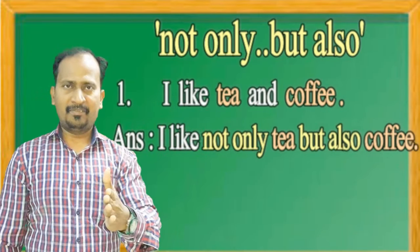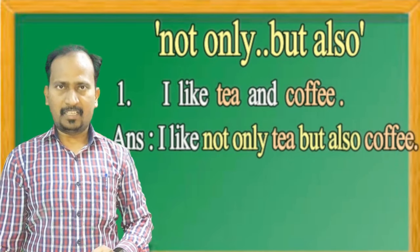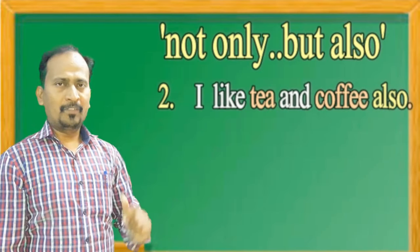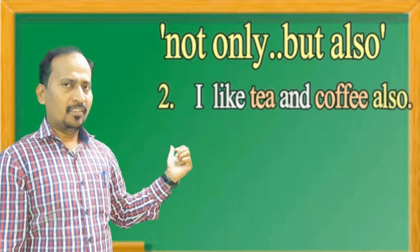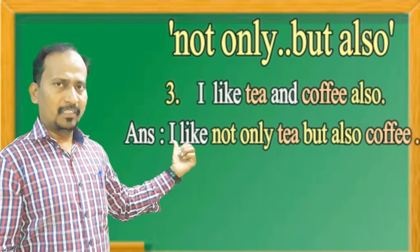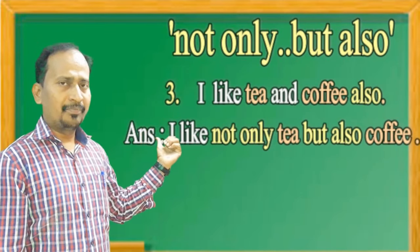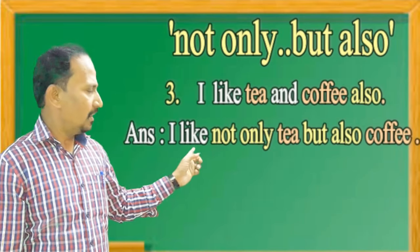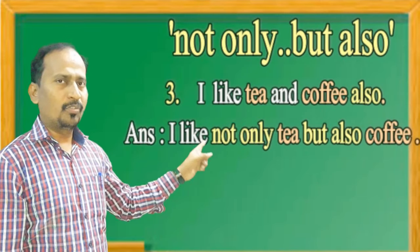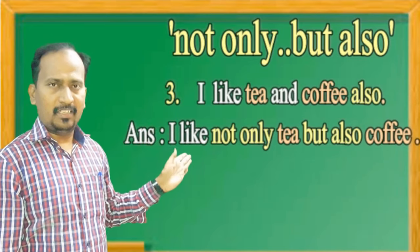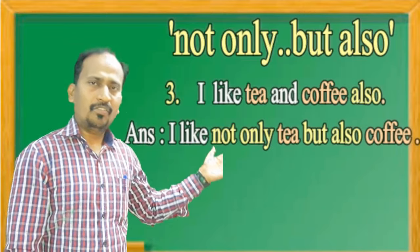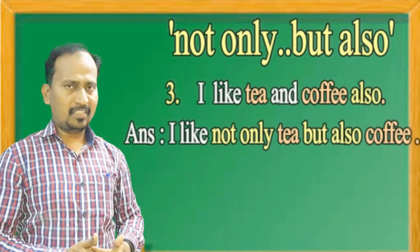Sometimes the sentence also has 'also' already — for example: 'I like tea and coffee also.' Now if we need to use 'not only but also', we remove the extra 'also' because 'but also' already contains 'also'. So the answer remains: I like not only tea but also coffee.